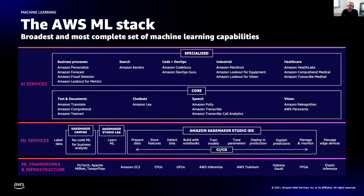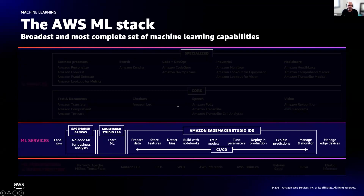At the bottom layer, the ML frameworks and infrastructure, it's a do-it-yourself approach where we provide compute instances right for machine learning, machine images and containers with deep learning frameworks and the needed drivers, and you take it from there. At the middle layer is where Amazon SageMaker fits in — and let's zoom in on that.